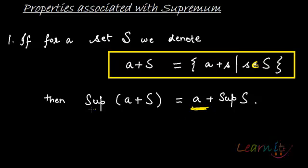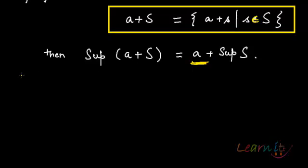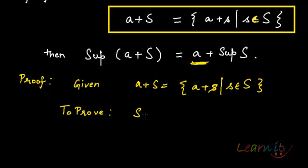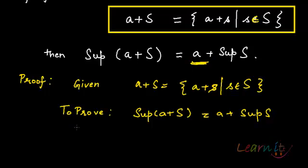Let's try to prove it. It's an if-then statement. For the proof, we are given that A plus S equals the set {A plus s : s belongs to S}, and we need to prove that sup(A plus S) equals A plus sup(S). In other words, A plus sup(S) represents the supremum of the set A plus S.